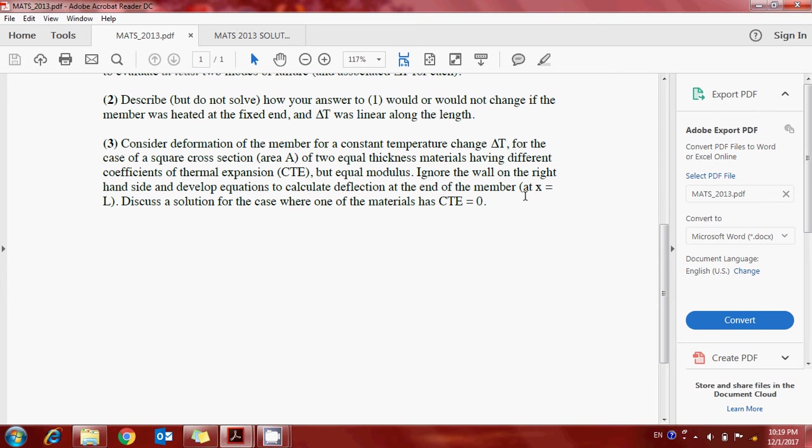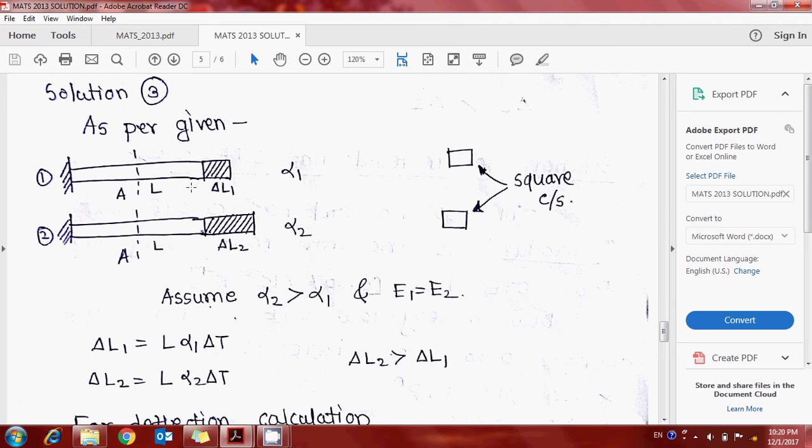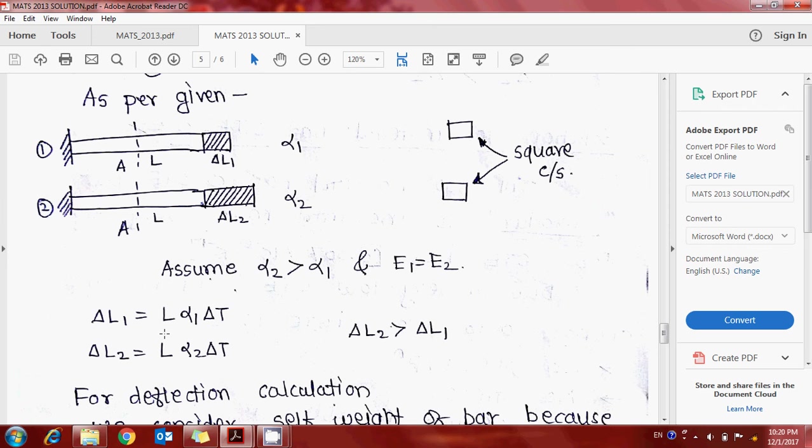Now go to solution three. In question three, consider deformation of the member for constant temperature change delta T. For the case of square cross-section having two equal thickness materials with different coefficients of thermal expansion but equal modulus, ignore the wall on the right-hand side and develop an equation to calculate deflection at the end of the member at x equals L. Discuss a solution for the case where CTE equals zero.